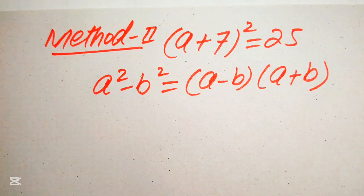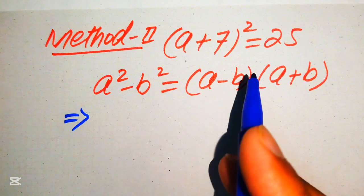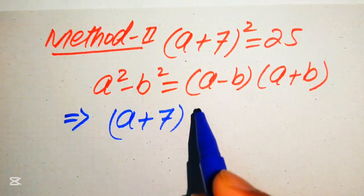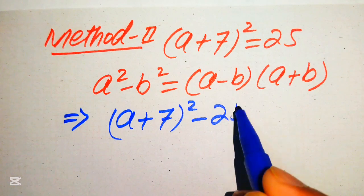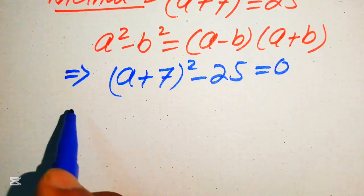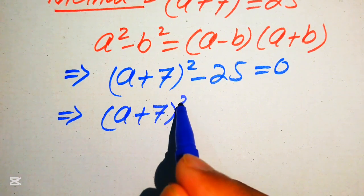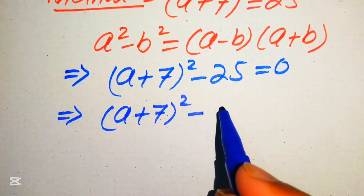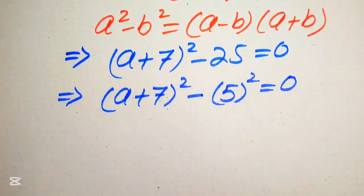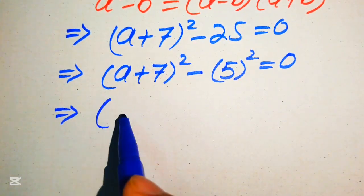To use this formula, we first rewrite the equation in standard form. Moving 25 to the left: (a + 7)² − 25 = 0. We write 25 as 5², giving (a + 7)² − 5² = 0.